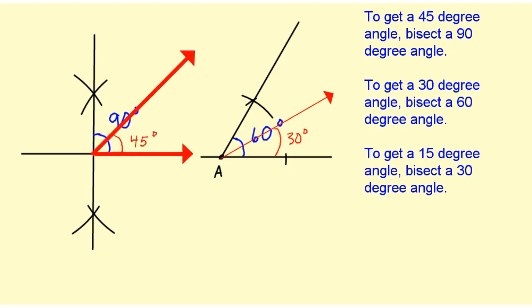To get a 45-degree angle, we would bisect a 90-degree angle. To get a 30-degree angle, we would bisect a 60-degree angle. And to get a 15-degree angle, we would bisect a 30-degree angle.